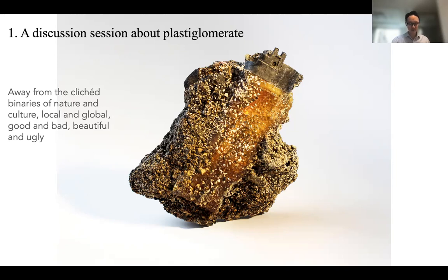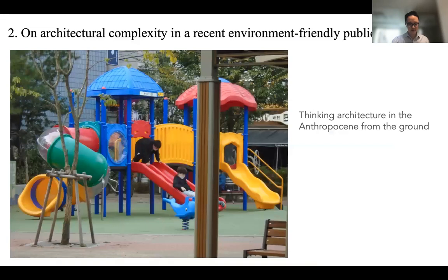The second part is to explore what I mean by complexity by investigating a recent environmental-friendly public project located in Seoul, which is a playground made of wasted cell phones. What makes this case worth noticing is its indistinctiveness, which is supposed to be a symbolic monument made by recycled materials but having no strong connotations of environmental moralism. This nuanced reading will encourage us to think about the open relationship between architecture and plastic, also offering another way of thinking about architecture in the Anthropocene from the ground.